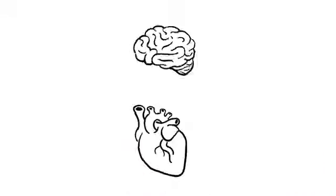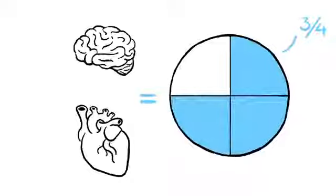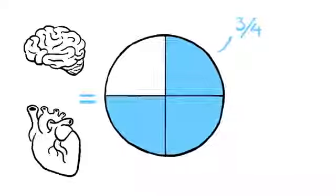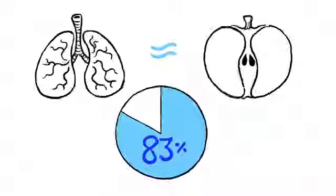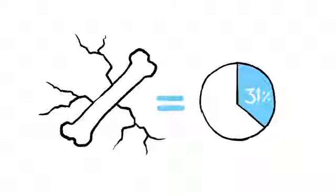Water isn't only in our blood. An adult's brain and heart are almost three-quarters water. That's roughly equivalent to the amount of moisture in a banana. Lungs are more similar to an apple, at 83%, and even seemingly dry human bones are 31% water.